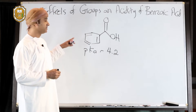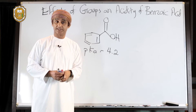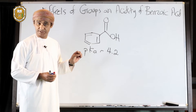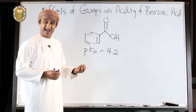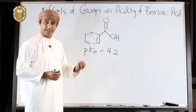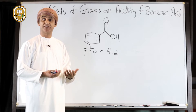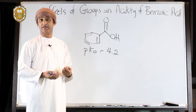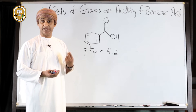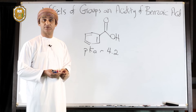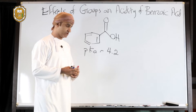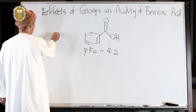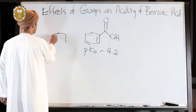Let's now try to see the effects of groups on the acidity of benzoic acid. If there is a group on benzoic acid, what effect would it have on the acidity? As we have seen before, groups can either be electron donating groups or electron withdrawing groups.